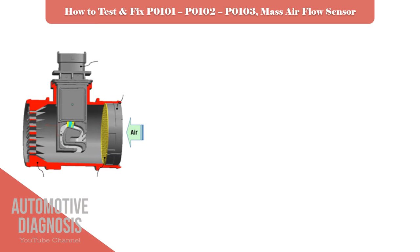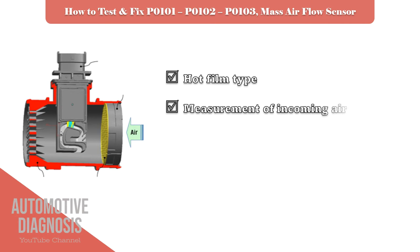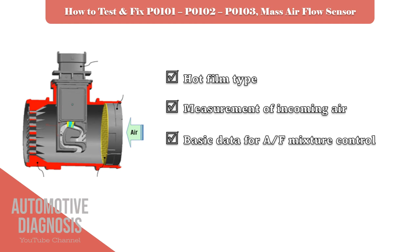Mass Airflow Sensor is located right after the air filter and measures the intake airflow. It measures the airflow by measuring how much current is being used by the hot film element to maintain the temperature constant, as airflow keeps cooling down the hot film element. The more airflow, the more cooling effect on the MAF Sensor, so it must consume more current to stay at the constant temperature. Data from this sensor is one of the important inputs to the ECM to calculate the injection timing.